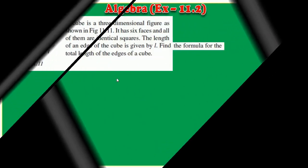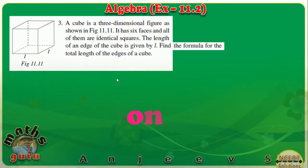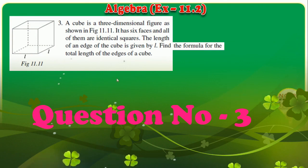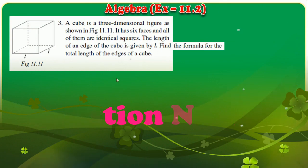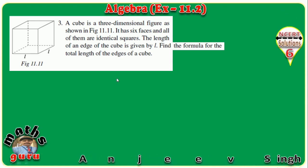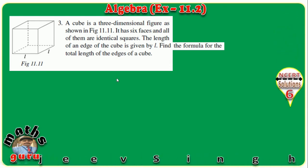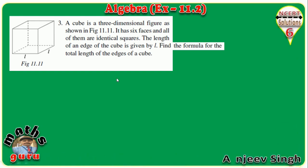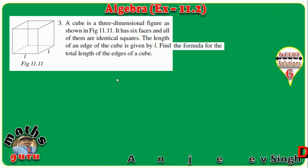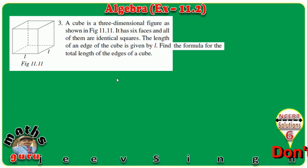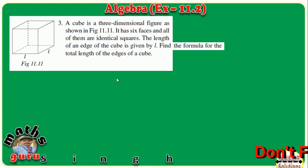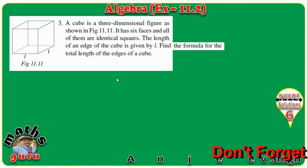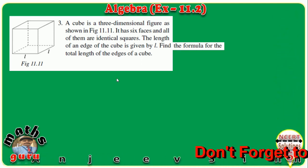The next question: a cube is a 3-dimensional figure. It has 6 faces and all of them are identical squares. The length of an edge of a cube is given by L. Find the formula for the total length of edges of a cube.